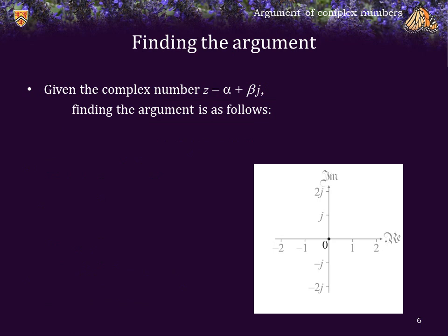Given the complex number z = α + βj, finding the argument is as follows. First, the argument of 0 is 0. Next, if α = 0, that is, it is an imaginary number, the argument of z is π or 90° if β > 0, and if β < 0, then the argument is -π or -90°.